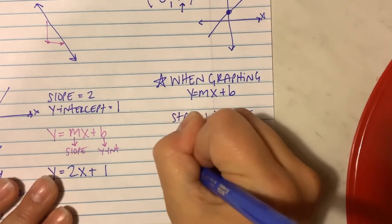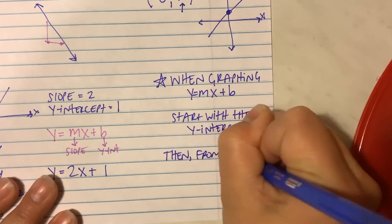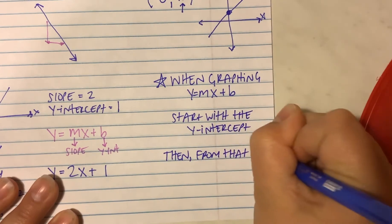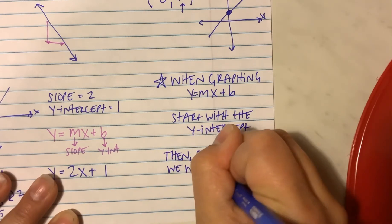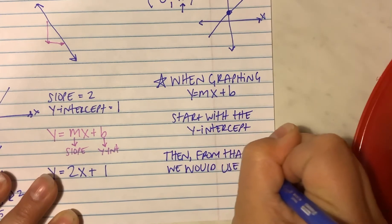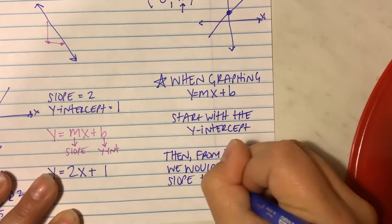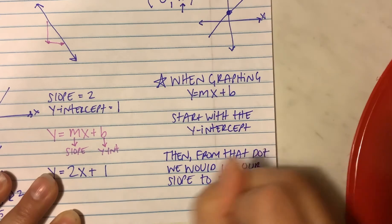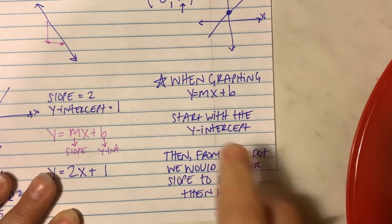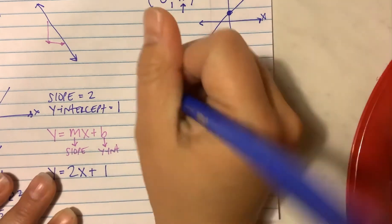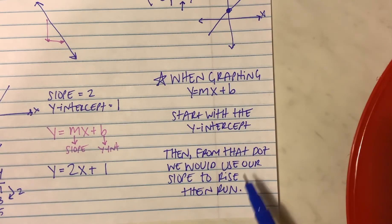Then from that dot, we would use our slope to rise, then run. We will practice this later on, maybe tomorrow. But for now, I just need you to get all these notes here. Remember, if I was going too fast for you, I need you to pause the video.